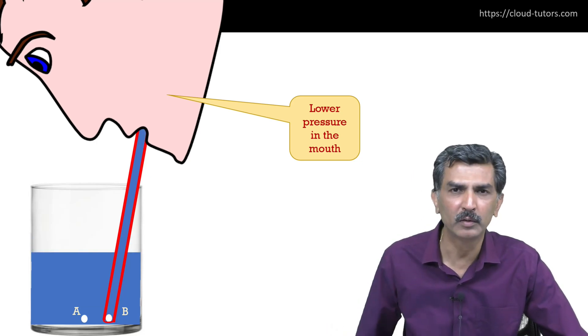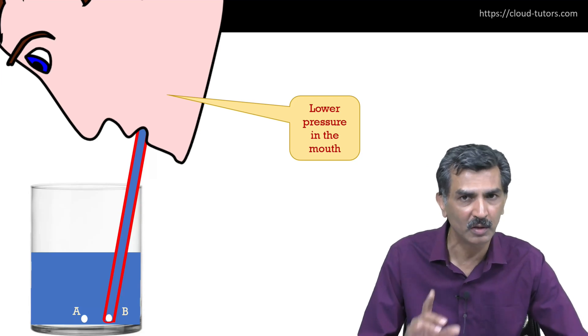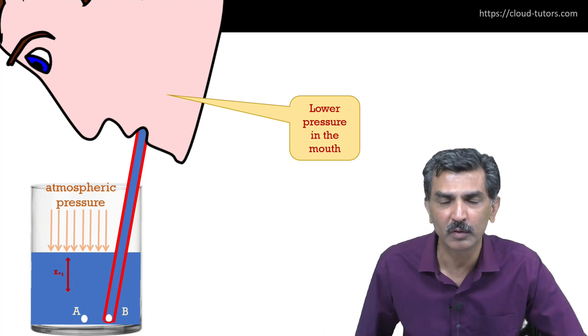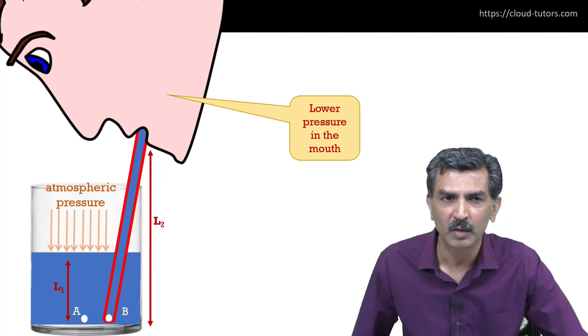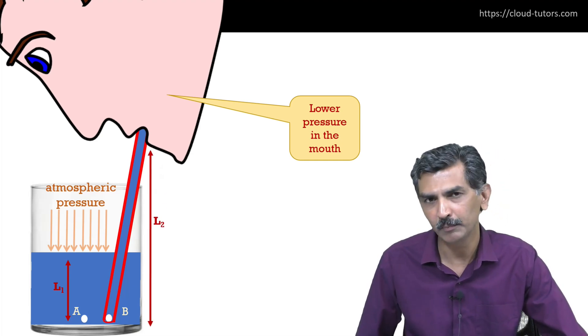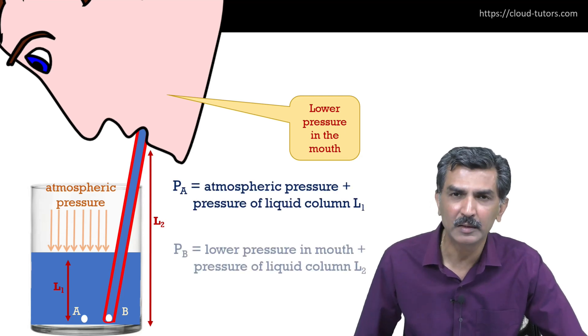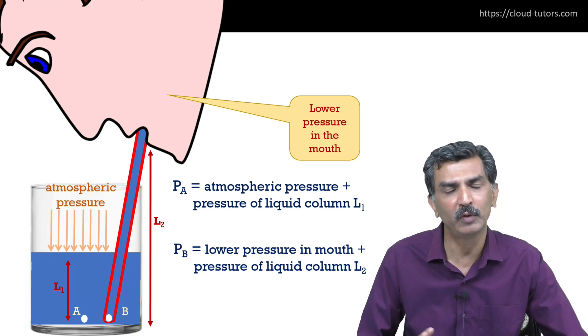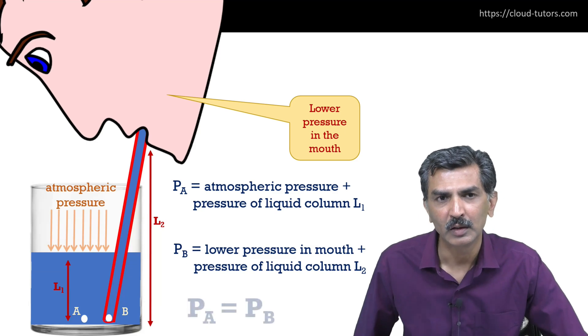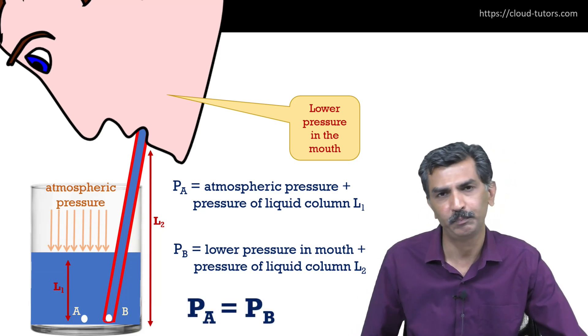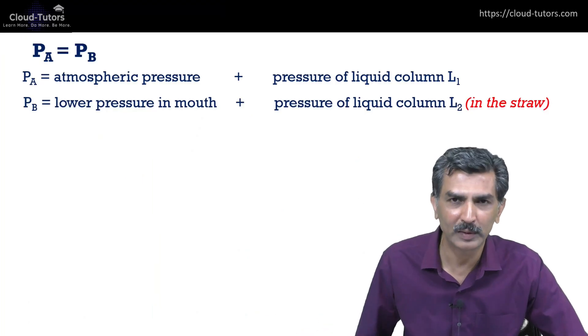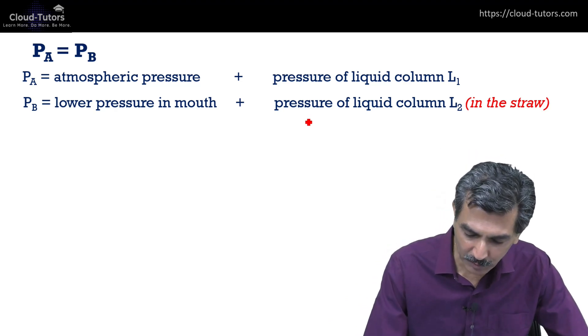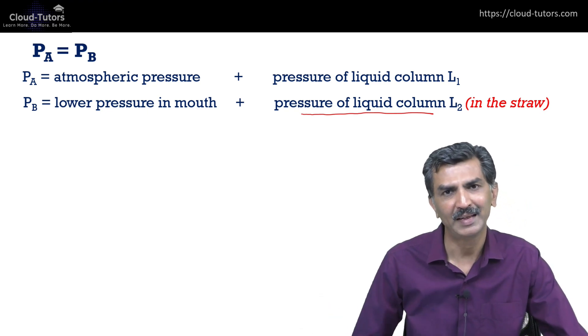So you're sipping a drink; the liquid begins to rise in the straw. At this point, remember you have created an area of low pressure in your mouth. So the pressure at point A is a combination of two things: it's the atmospheric pressure on the surface of the liquid plus the vertical column L1. And the pressure at point B is the lowered pressure in the mouth plus the length of the vertical column of liquid L2 in the straw. And those two pressures are equal in that scenario. When these two pressures are equal, remember if you want to increase the liquid column L2 in the straw - which means take the liquid to a higher and higher level, increase the length of the straw...